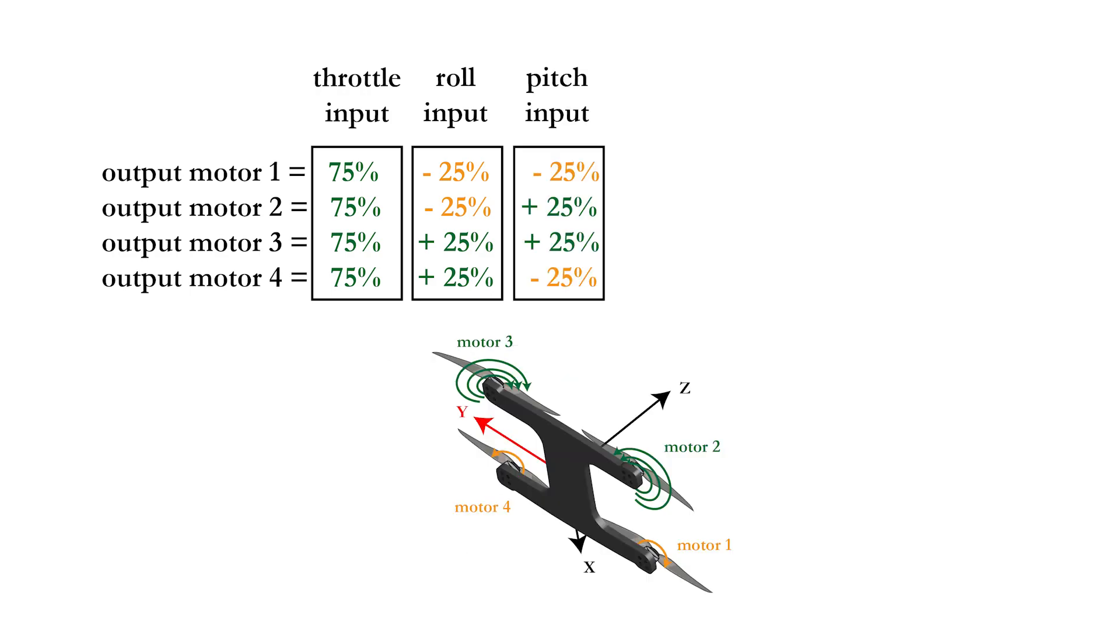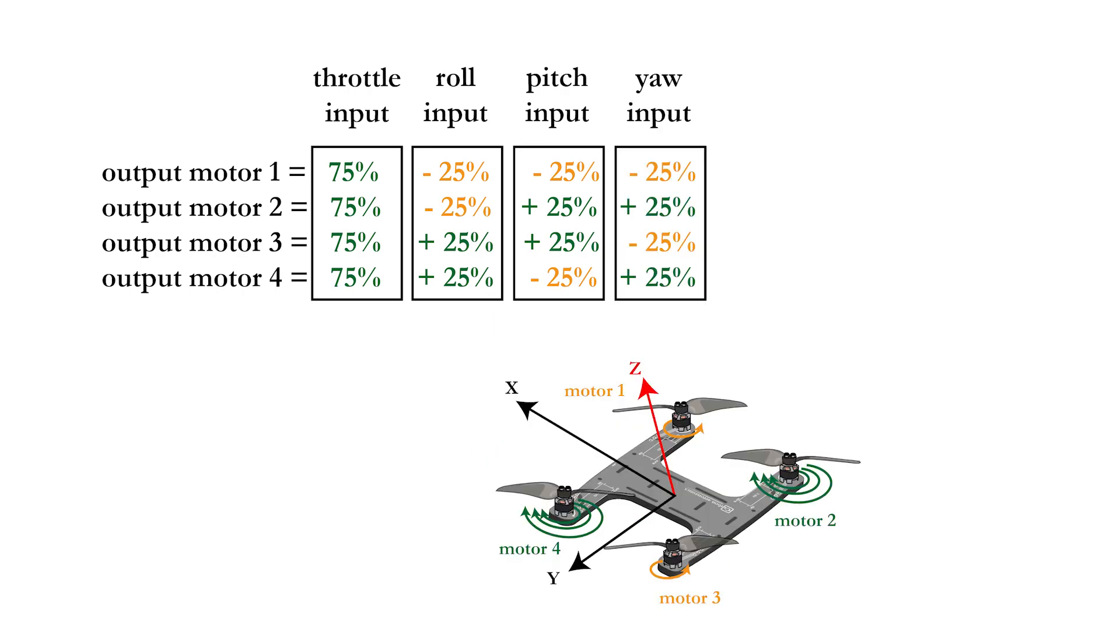For the pitch movement, you will subtract power from motors 1 and 4 and add power to motors 2 and 3. And finally, when you add the yaw rotation, it are motors 1 and 3 that need to reduce their power while motors 2 and 4 increase it.